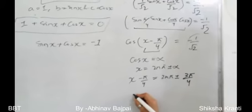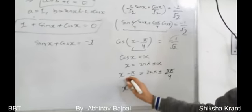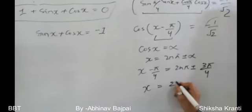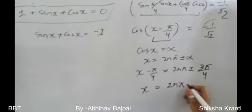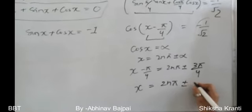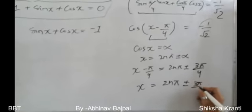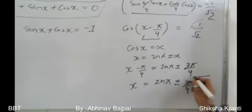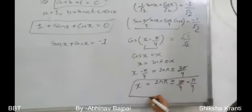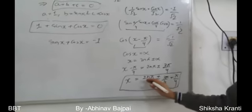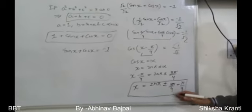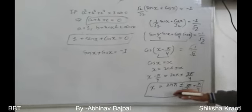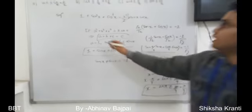Applying the general solution of cos θ = α, i.e., θ = 2nπ ± α: x - π/4 = 2nπ ± 3π/4. Transferring π/4 to the right side gives x = 2nπ ± 3π/4 + π/4. The correct option is A.